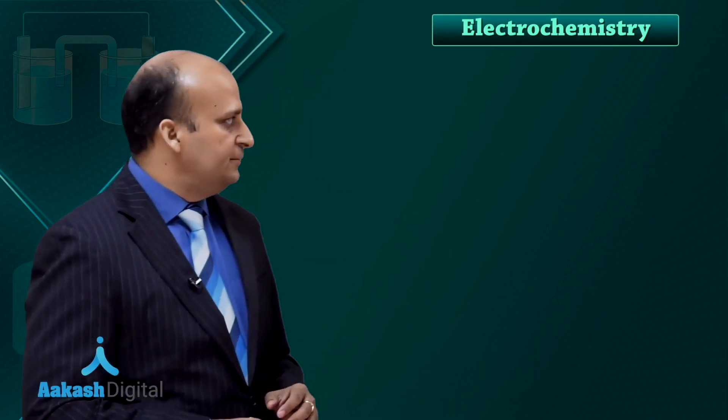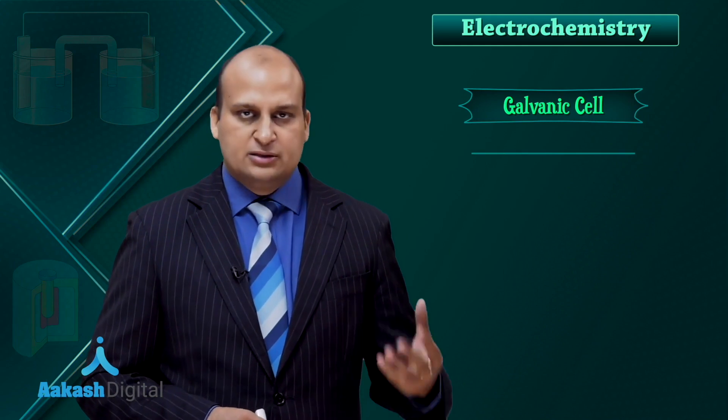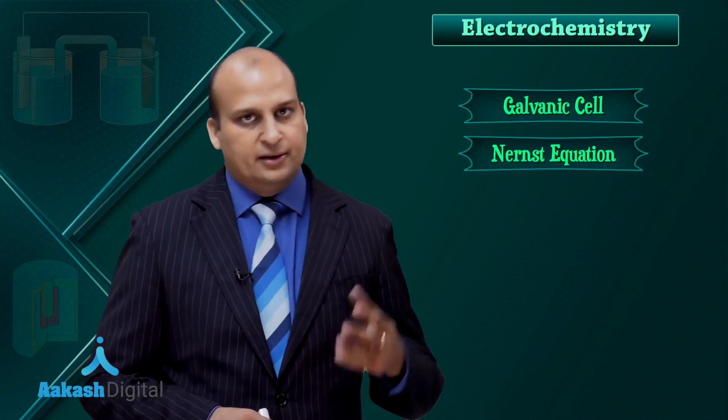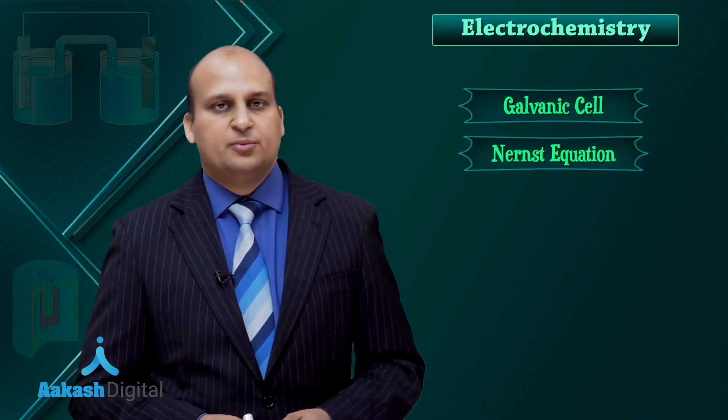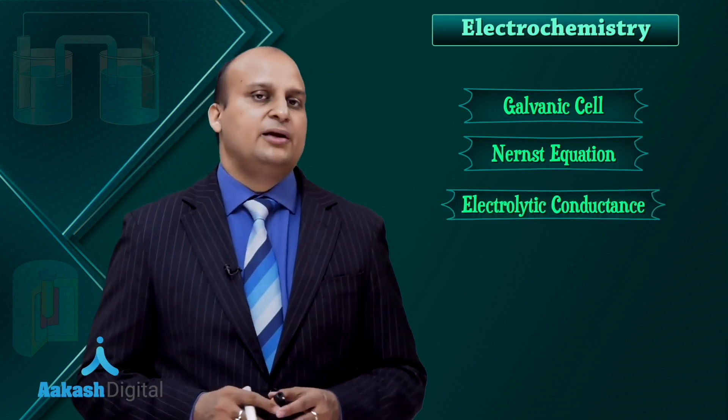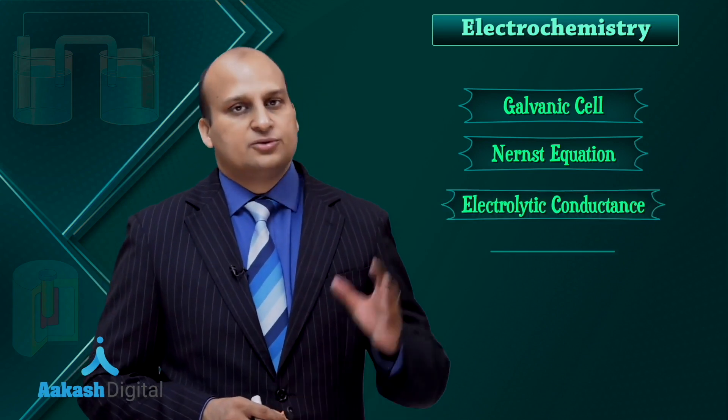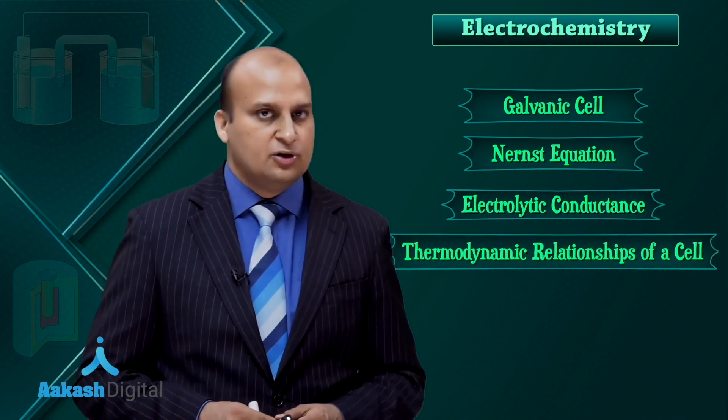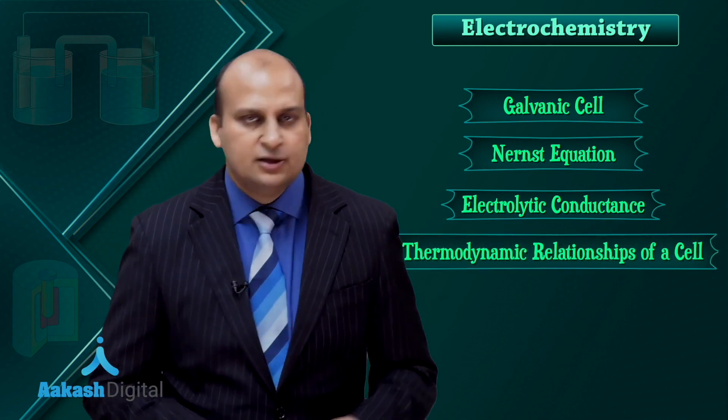Now the topics that we are going to study in this particular chapter are galvanic cell, in which we will be talking about the Nernst equation, followed by electrolysis, and then we will be talking about the electrolytic conductance. Also, we will be discussing about the thermodynamic relationships of a cell. So, let us start.